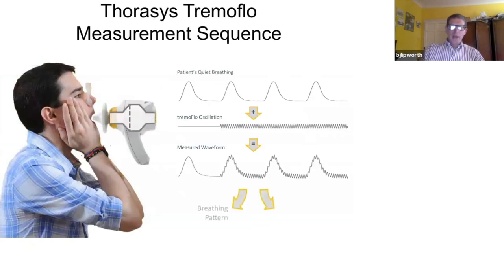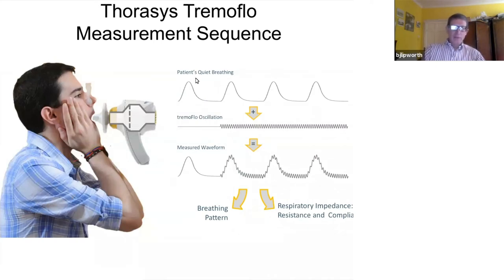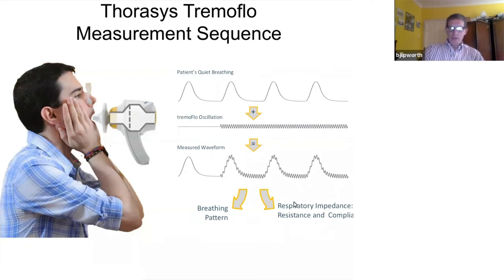This diagram shows what's involved. The patient wears a nose clip, holds their cheeks, and breathes in and out in normal quiet tidal breathing through the portable tremor flow device. A vibrating mesh transmits sound waves down the bronchial tree, superimposing oscillations from the tremor flow onto the patient's normal quiet tidal breathing.